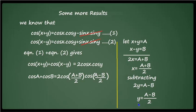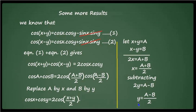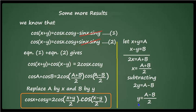To express the formula in terms of x and y, just replace a by x and b by y. You will get: cos x plus cos y is equal to 2 cos of (x plus y)/2 into cos of (x minus y)/2. This is the final result.